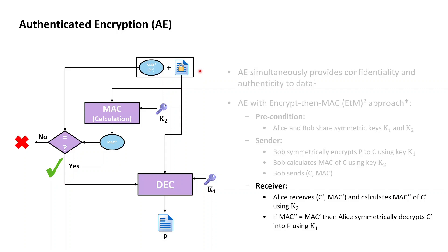Alice, in a first step, takes the ciphertext received and symmetric key K2 she agreed on with Bob, and calculates a MAC of the ciphertext she received. Alice then verifies that the MAC tag she just calculated herself is the same as the MAC tag she received. If they match, Alice assumes the ciphertext was really sent by Bob, and proceeds to decrypt the received ciphertext using symmetric key K1 to recover the original plaintext that Bob sent.